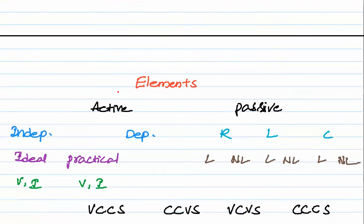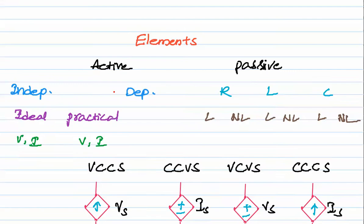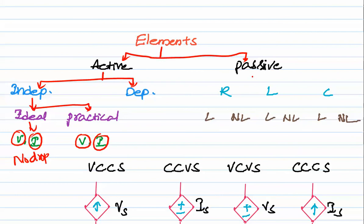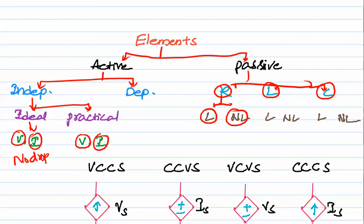Next we will see elements classified by active and passive components. Active components are divided into independent and dependent sources. Independent sources are further classified into ideal and practical — both having voltage source and current source types. In the ideal case no internal drop occurs. Passive elements include R, L, and C. Resistance is further classified into linear and non-linear; inductor and capacitor are also classified into linear and non-linear.